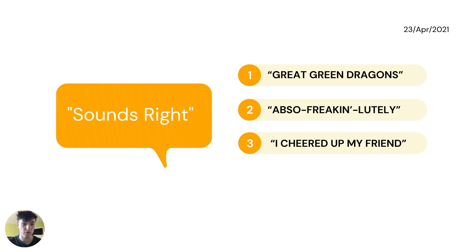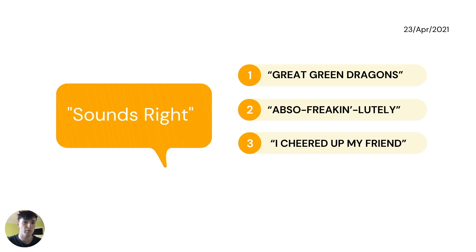The whole 'sounds right' phenomenon — that's what it means to have acquired a language; you're essentially just picking up the language. For example, we say 'a great green dragon' instead of 'green great dragon.' You would say 'abso-freaking-lutely' instead of 'absolute-freaking-ly.' You'd say 'I cheered up my friend' but not 'I cheered up her.' These are all examples of things we have acquired when picking up our native language, but this kind of thing gets picked up when learning other languages too.